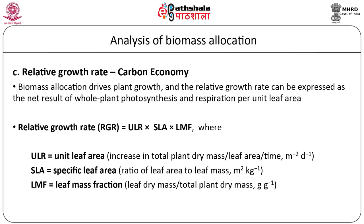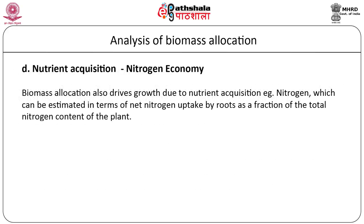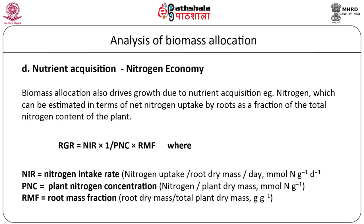The relative growth rate (RGR) of the plants is then given by the product of these three traits. Biomass allocation is also a strong driver of the capacity of plants to acquire nitrogen, and the total nitrogen content can be used as a measure of plant growth in terms of relative growth rate. Since nitrogen acquisition is a function of roots, relative growth rate can be expressed as a net result of nitrogen uptake by roots and its redistribution in the plants. Hence, it is a product of the nitrogen uptake by the root fraction per unit plant nitrogen concentration.